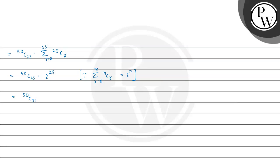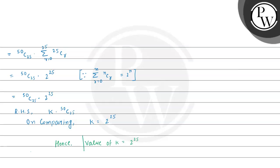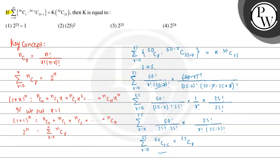Applying the property, we get 50C25 multiplied by 2 to the power 25. This is our LHS solved. On the RHS we were already given k times 50C25. On comparing both sides, we get the value of k equal to 2 to the power 25. This is our final answer. Looking at the options, our third choice is correct. I hope you understood the solution. Best of luck, thank you.